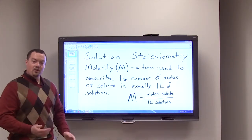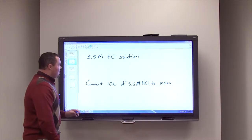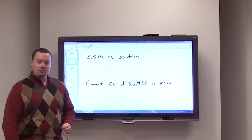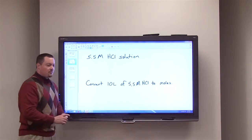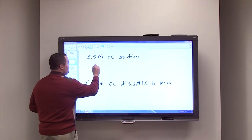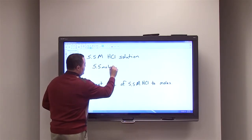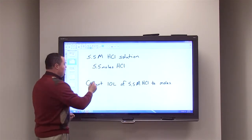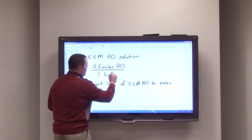Let's look at a quick example. We have a 5.5 molar hydrochloric acid solution. What does that mean? If it's 5.5 molar, that means we have 5.5 moles of HCl in one liter of solution.